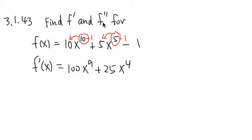Now for the second derivative, we're just going to pretend that this is the new question: 100x to the 9 plus 25x to the 4. And we're just going to look at this and take the derivative again. So that's the second derivative. It's the derivative of the derivative.